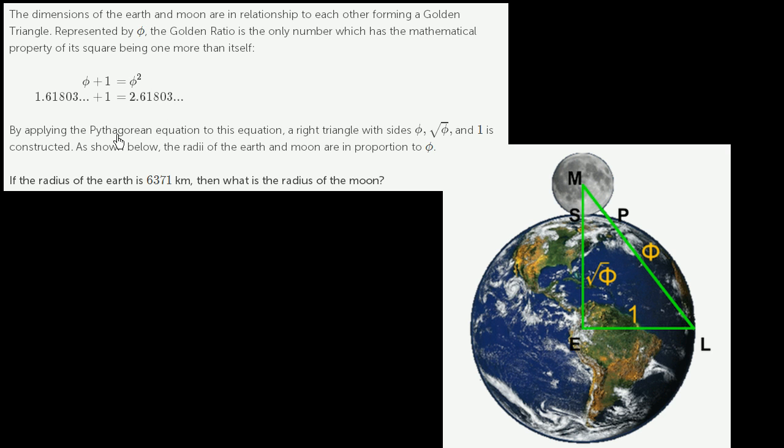They tell us, by applying the Pythagorean equation to this equation, a right triangle with sides phi, square root of phi, and 1 is constructed. So what are they saying? They're saying, well look, this looks kind of like the Pythagorean equation or the Pythagorean theorem. If we make this a squared, we make this b squared, and we make this c squared, you could think about that as expressing the relationship between the sides of a right triangle.